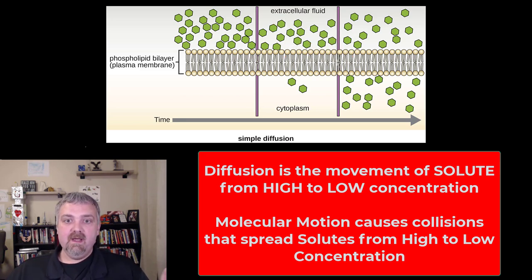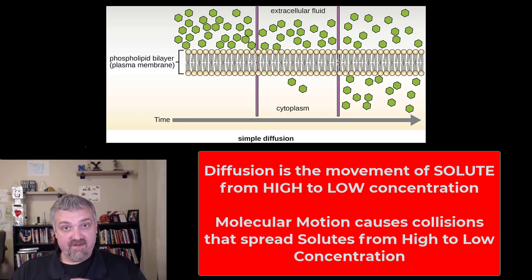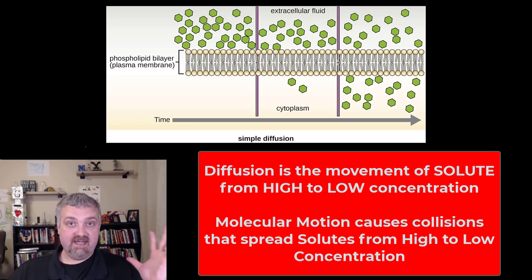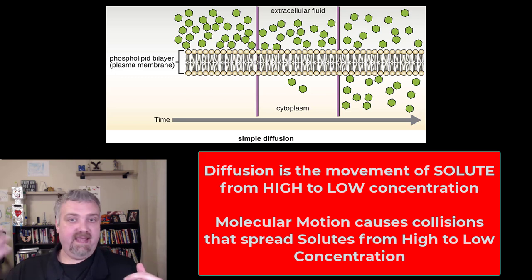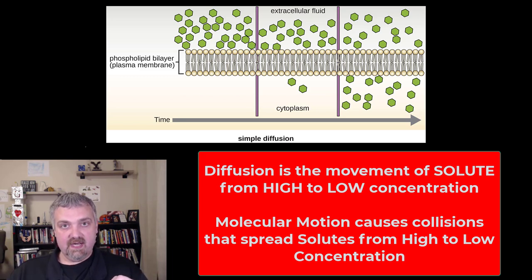Some real-world examples: if you spray perfume or some sort of scent in a room, it's going to spread throughout that room from the area of high concentration where you originally sprayed it, and then it's going to diffuse through the room. Candles will do the same thing — all sorts of things are going to diffuse. So if things are moving from where there's a lot of it — an area of high concentration to low concentration — this is going to be diffusion.